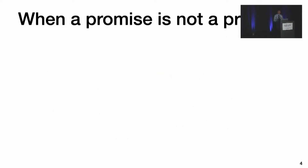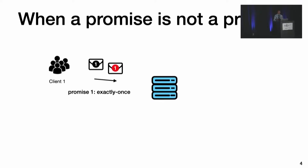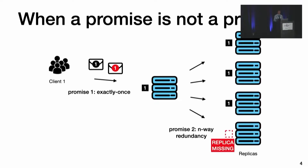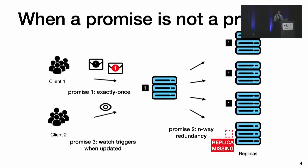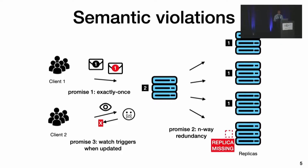However, bugs in a distributed system can break these promises. Some messages may be delivered twice, some data may not get replicated to enough copies, and when an object is updated, the system may not notify clients. These failures are semantic violations.